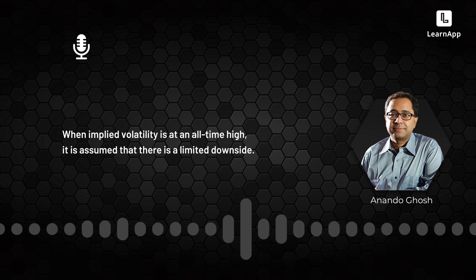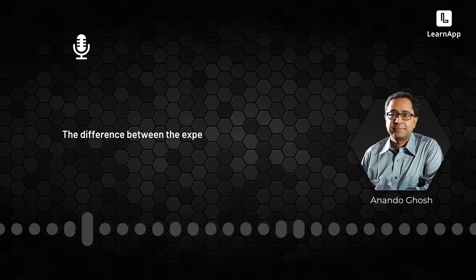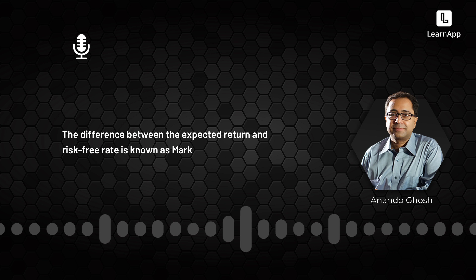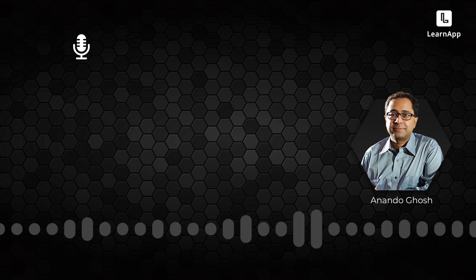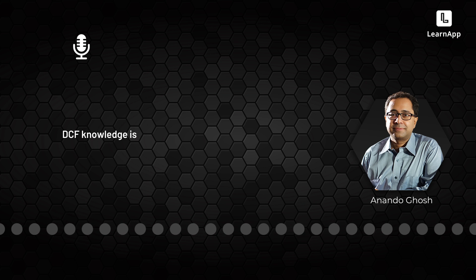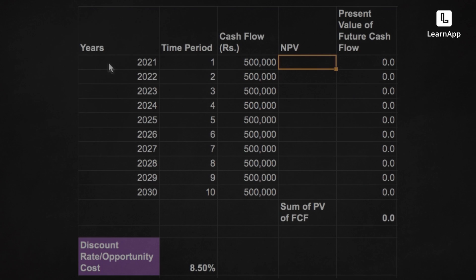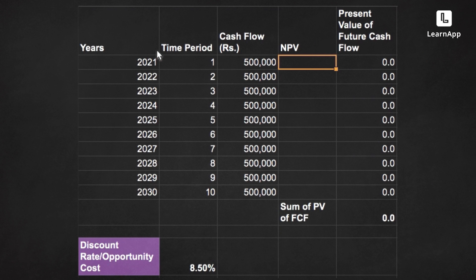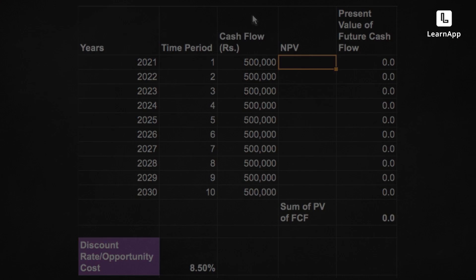In order to understand what is an implied market risk premium, you need to understand the basics of discounted cash flow analysis. This is the first part of the discounted cash flow analysis. Essentially, the DCF is divided into a forecast period and then there is the terminal value.